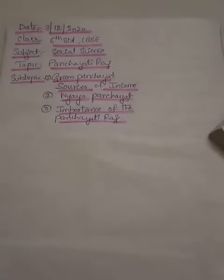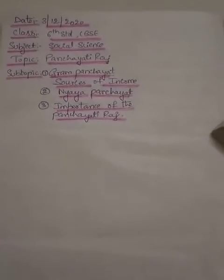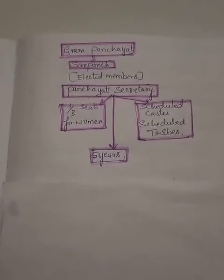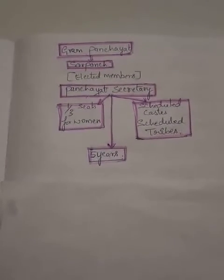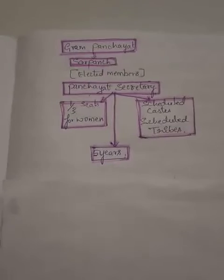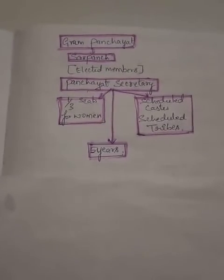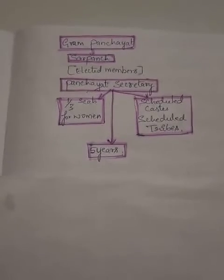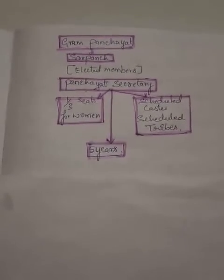We also saw Gram Panchayat and its composition. Gram Panchayat consists of members elected by the Gram Sabha and works for one village or two or more small villages together. It consists of a Sarpanch, elected members by the Gram Sabha, and a Panchayati secretary. One third of the seats are allotted for women, and it also includes scheduled castes and scheduled tribes. It works for a term of five years.